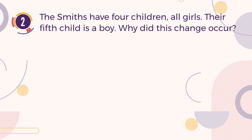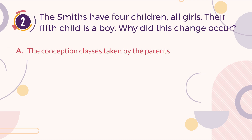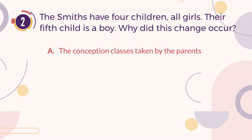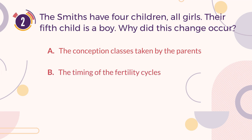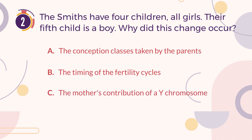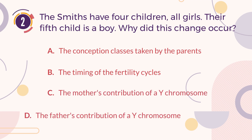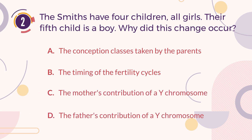Number 2. The Smiths have four children, all girls. Their fifth child is a boy. Why did this change occur? A. The conception class is taken by the parents. B. The timing of the fertility cycles. C. The mother's contribution of a Y chromosome. D. The father's contribution of a Y chromosome.